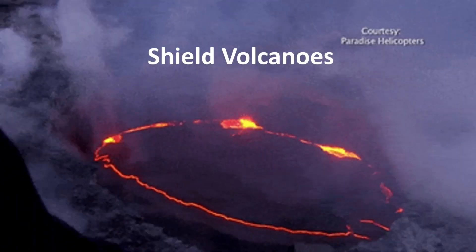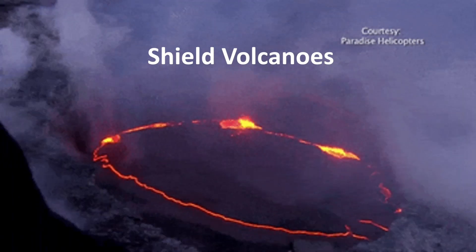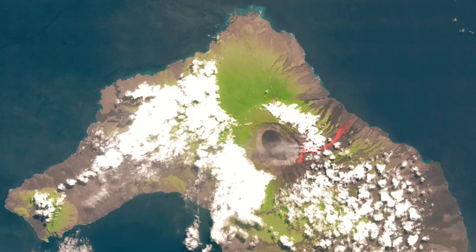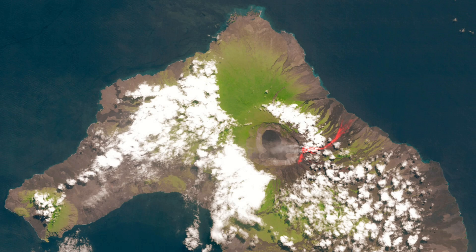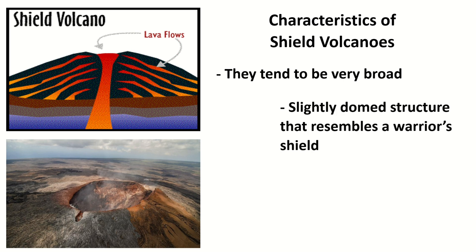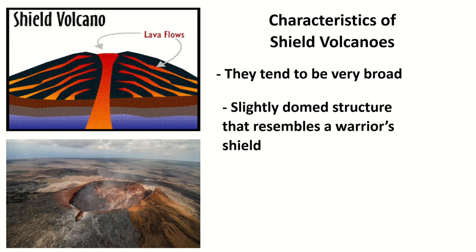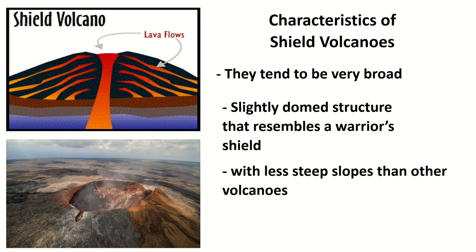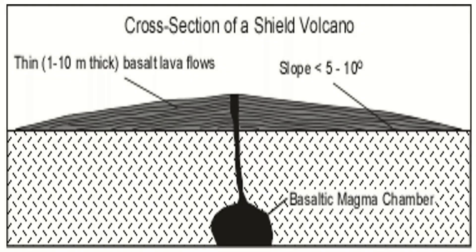Number one: Shield Volcanoes. Shield Volcanoes get their name from their shape. They tend to be very broad, slightly long structures that resemble a warrior shield. They have less steep slopes than other volcanoes. The slope of Shield Volcanoes is roughly 10 degrees near the base and 5 degrees near the top.